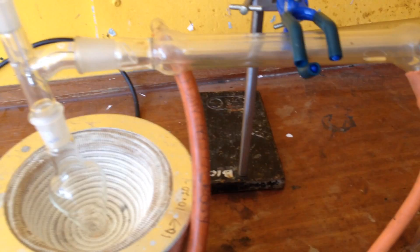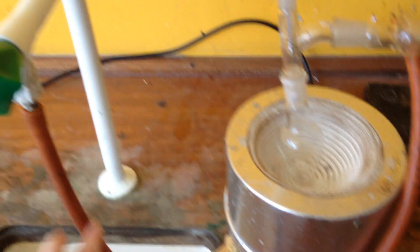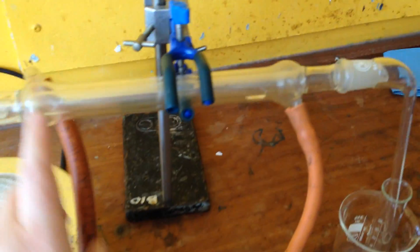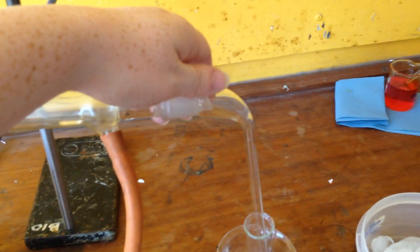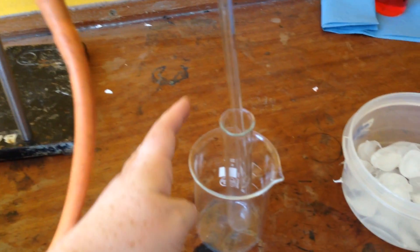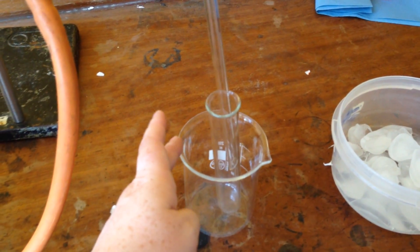This is the condenser. You need this end here attached to the tap and then the other end has to go into the rather dirty sink.